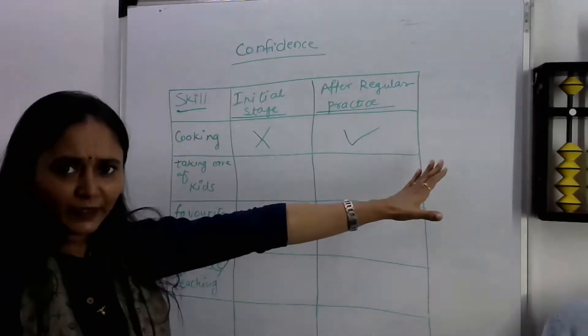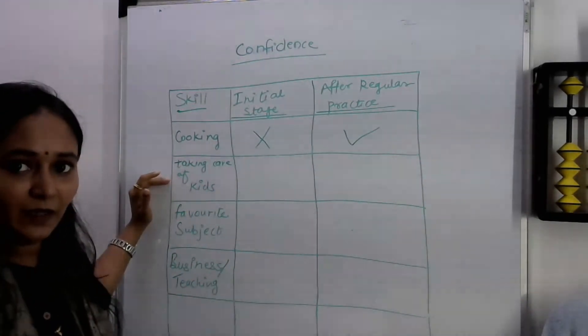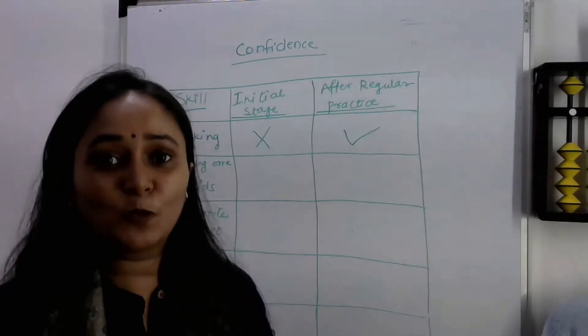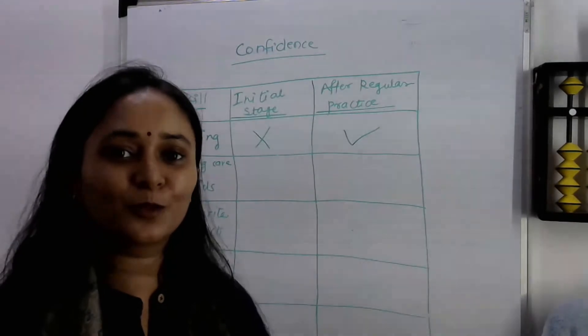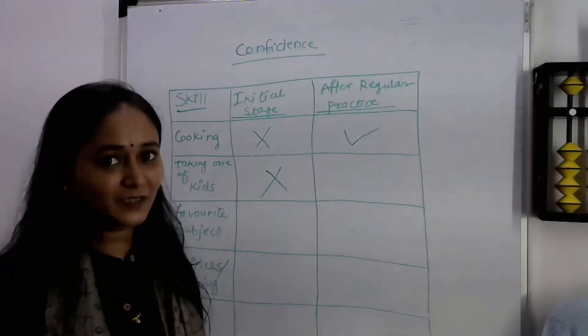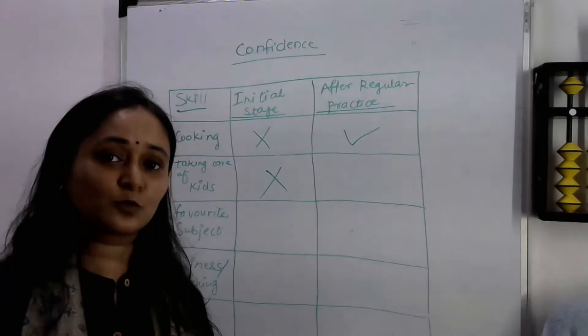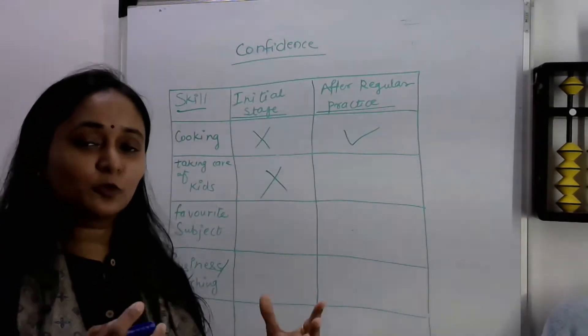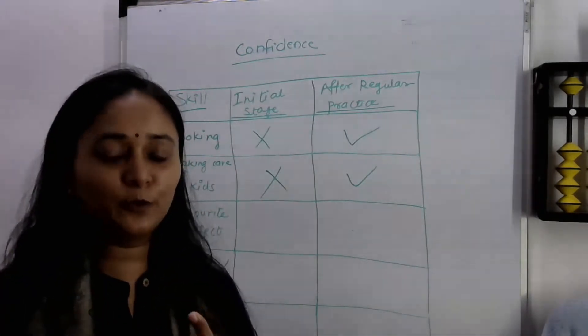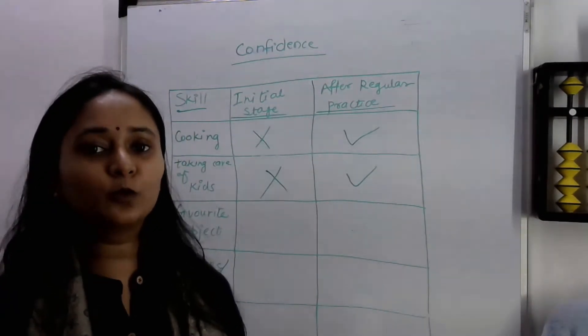Let's take the example of the next skill: taking care of kids. Just remember your initial stage of entering into motherhood. Initially we were not confident enough to handle a small baby, so our mother, again our mother-in-law, helped us to learn how to handle them, how to feed them, how to give them a bath. We learned these skills, and slowly and gradually we became confident enough. If you have two children, you can understand this point very well. For the first child you were not confident, and for the second child you did not even take any help because you were confident enough.